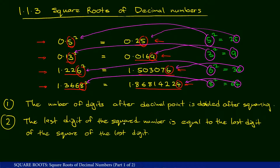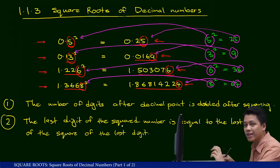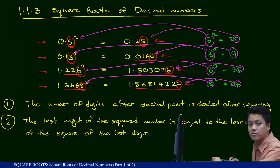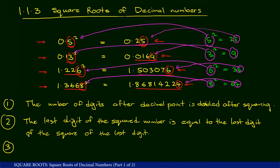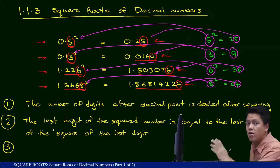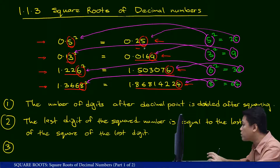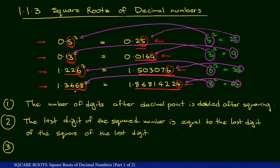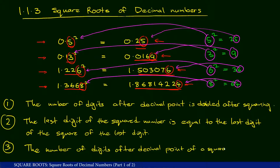So our second observation is: the last digit of the squared number equals the last digit of the square of the last digit. The third observation is that the square of a decimal number can only contain an even number of decimal digits. Take a look: two decimal places, four, six, and eight. A square of a decimal cannot have an odd number of decimal digits. The number of decimal places of a squared number is always even.